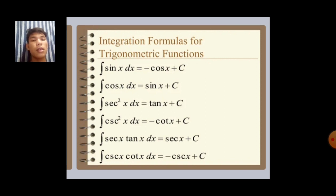The integral of sec squared x dx is equal to tan x plus c. Then integral of csc squared x dx is equal to negative cot x plus c.